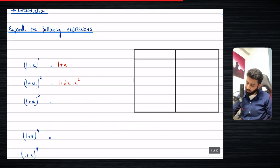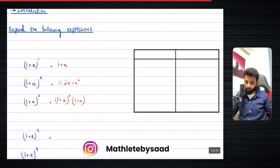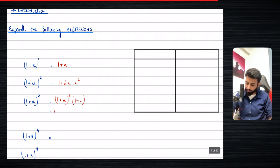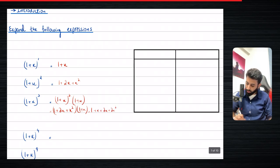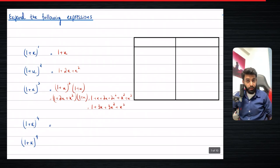To expand (1+x)^3, you can take the help of (1+x)^2 and multiply it by (1+x). So (1+x)² = 1 + 2x + x², multiplied by (1+x): 1·1 = 1, 1·x = x, 2x·1 = 2x, 2x·x = 2x², x²·1 = x², x²·x = x³. Combining terms gives us 1 + 3x + 3x² + x³.